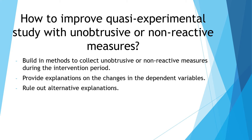How to improve a quasi-experimental study with unobtrusive and non-reactive measures? You have to think about your research design, your research objective, and also the theoretical framework that you're using. Building in methods to collect unobtrusive or non-reactive measures during the intervention will definitely help to provide explanation on the changes in the dependent variables. Better still, if the explanation can rule out alternative explanations. It is very much up to you to think about the research objective and the theoretical framework that underpins your research.